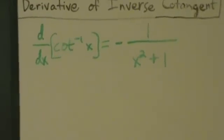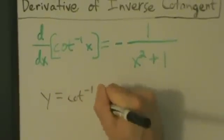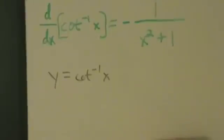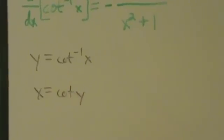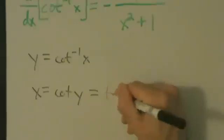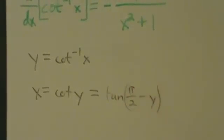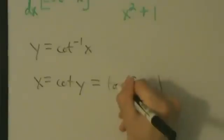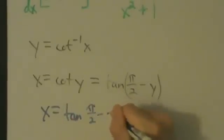Let's start with y equals inverse cotangent of x. This means x equals cotangent of y. The complementary angle theorem from basic trig tells us that cotangent of y is the same thing as tangent of pi over 2 minus y. So x equals the tangent of pi over 2 minus y.